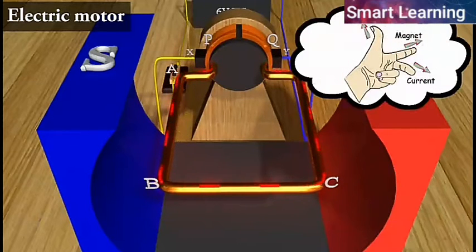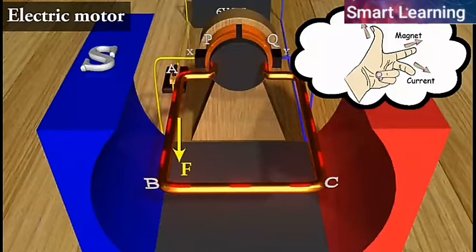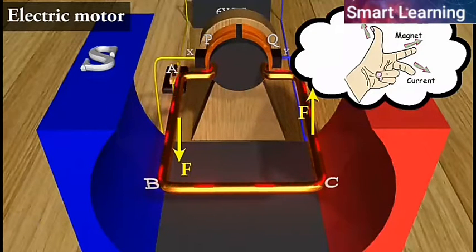On applying Fleming's left hand rule for the direction of force on a current carrying conductor in a magnetic field, we find that the force acting on arm AB pushes it downwards while the force acting on arm CD pushes it upwards.